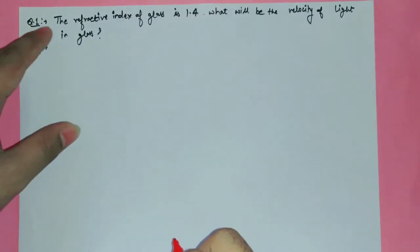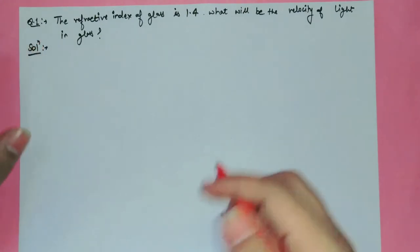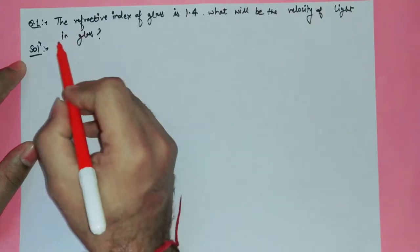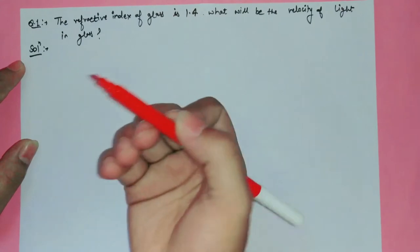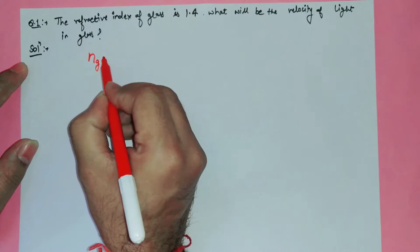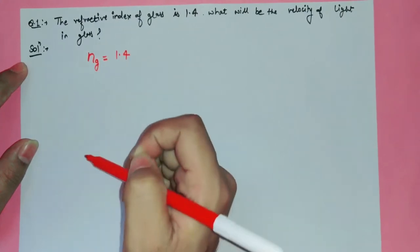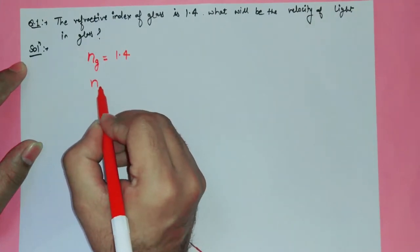Good morning class. Today we will do some extra questions related to the refractive index. The refractive index of glass is 1.4 — what will be the velocity of light in glass? We know that the refractive index of glass means the absolute refractive index, so the absolute refractive index of glass is given as 1.4.